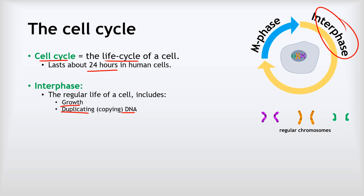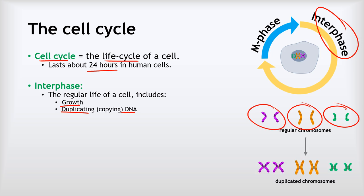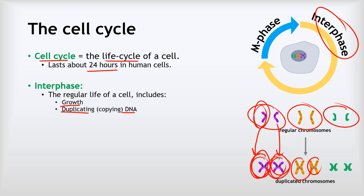Another thing that happens during interphase is that the DNA is duplicated. If the cell were to divide right now without replication, it wouldn't have enough DNA to form diploid daughter cells. So before mitosis, the DNA is replicated, forming X-shaped pairs of copied chromosomes — each X shape represents two copies of the same chromosome joined at the centromere.